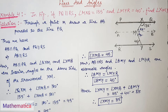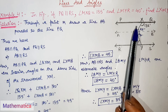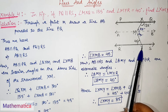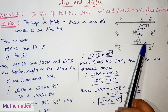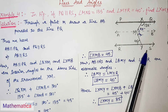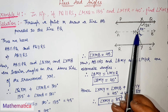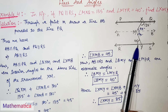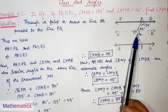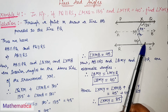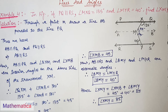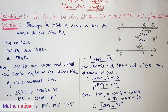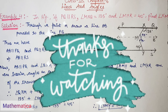It was easy! There was nothing complicated — we just used the concept of parallel lines. We applied two properties: first, the same side of the transversal (co-interior angles) property, and second, the alternate angles property. Without constructing this auxiliary line AB, we cannot directly apply the parallel properties between PQ and RS, because the transversal MX–MY is not a straight line. So we split it into two parts using the construction.